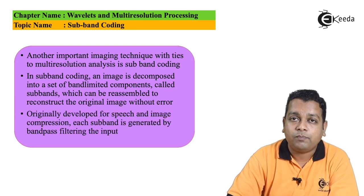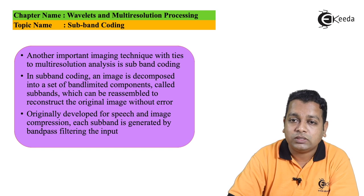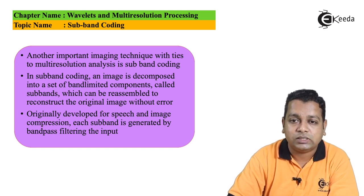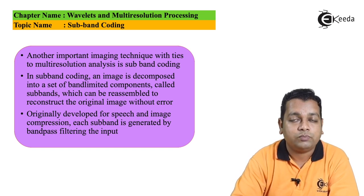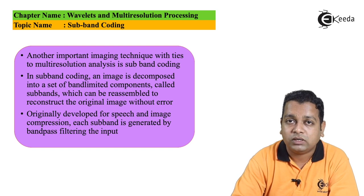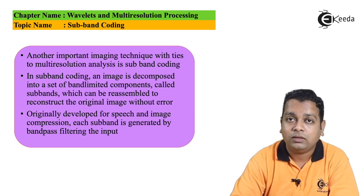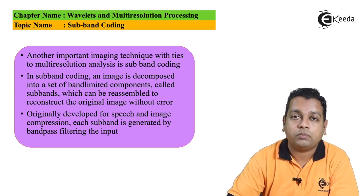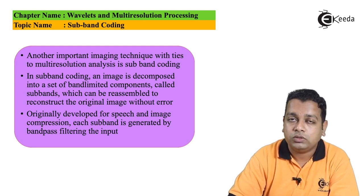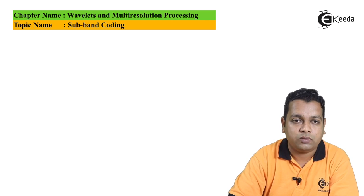Originally, subband coding was developed for the purpose of speech and image compression. Each subband is generated by band-pass filtering of the input. The types of filtering include low-pass filtering, band-pass filtering, band-stop filtering, and high-pass filtering. Out of these, band-pass filtering is used for the purpose of subband coding.